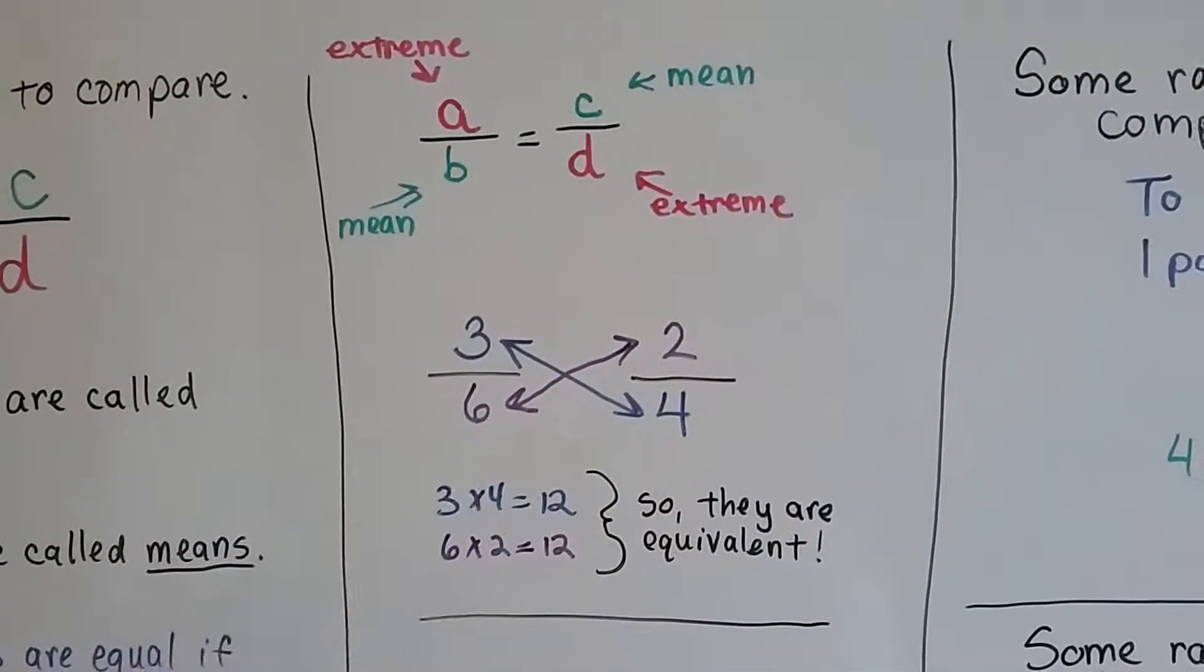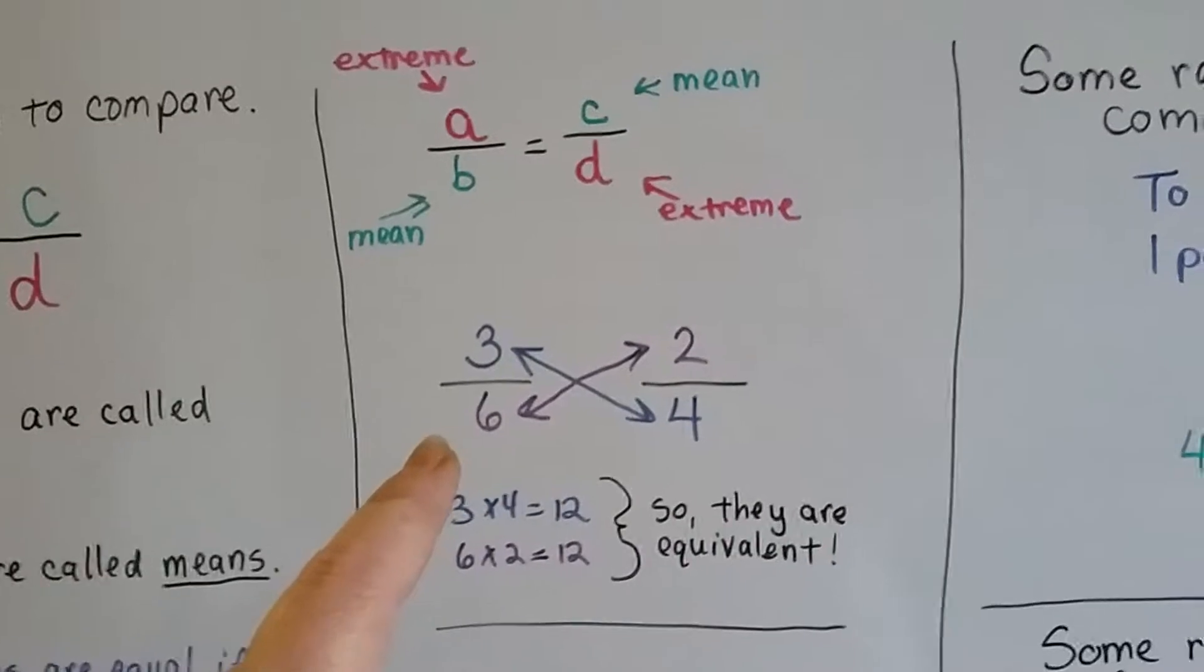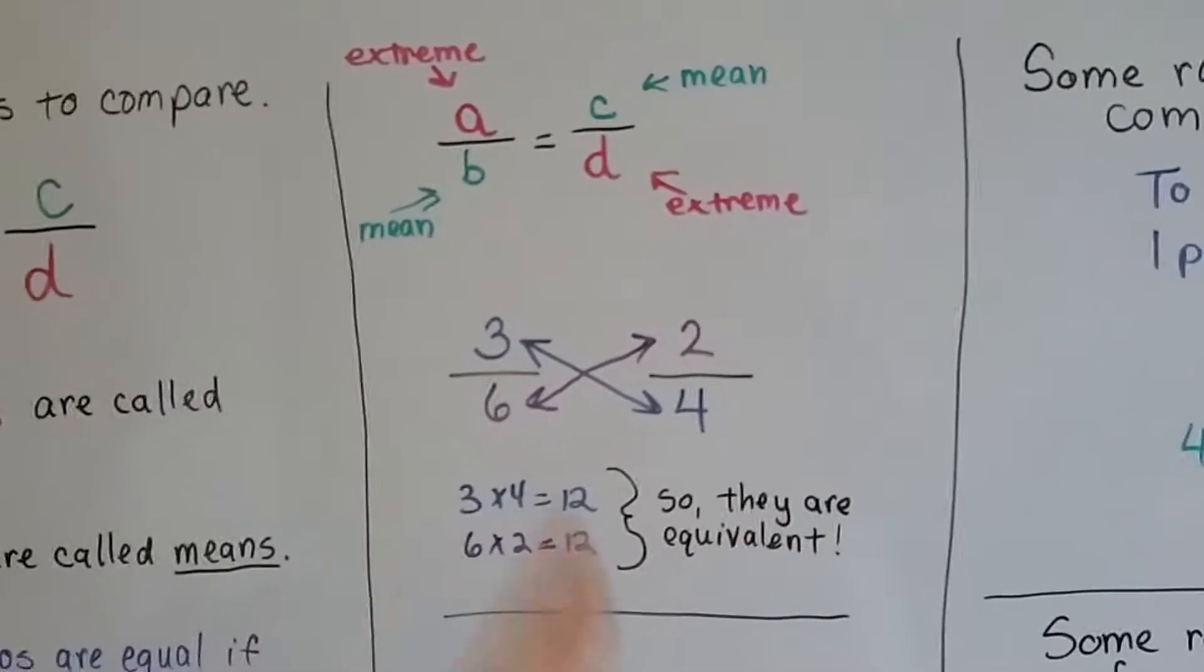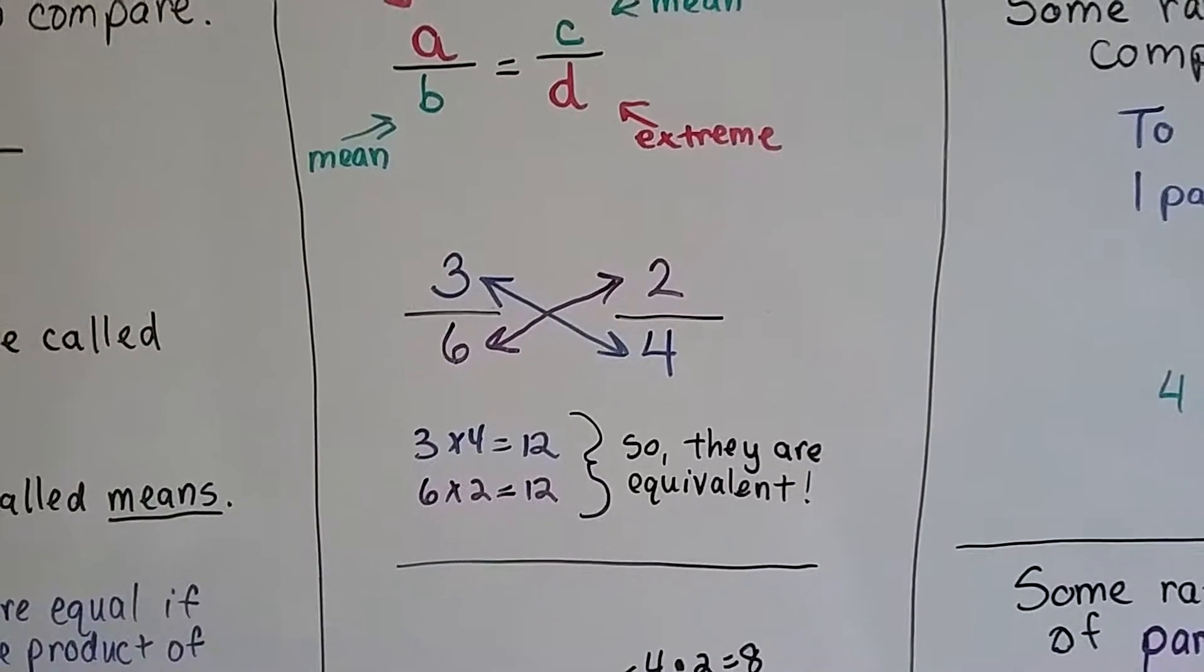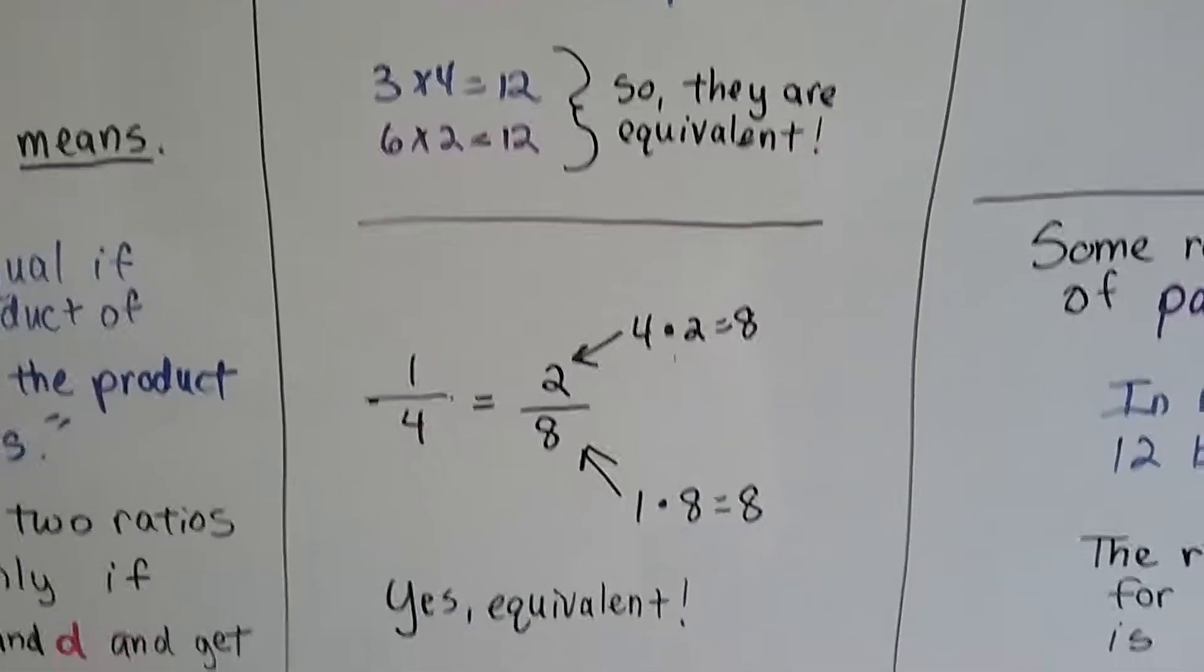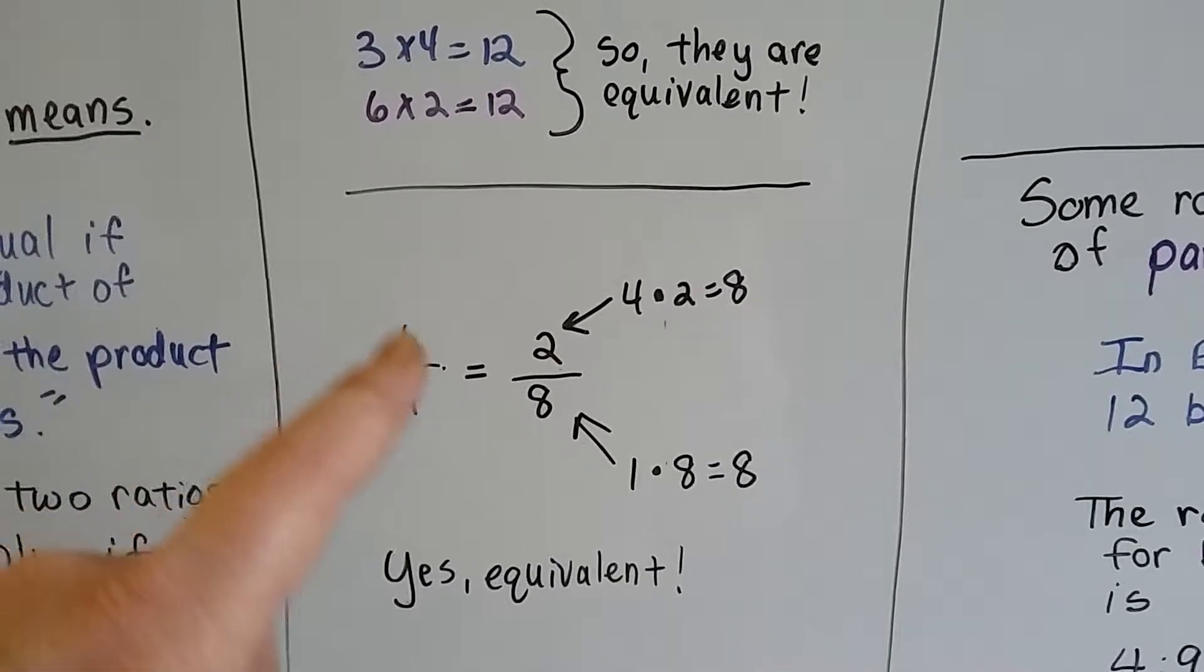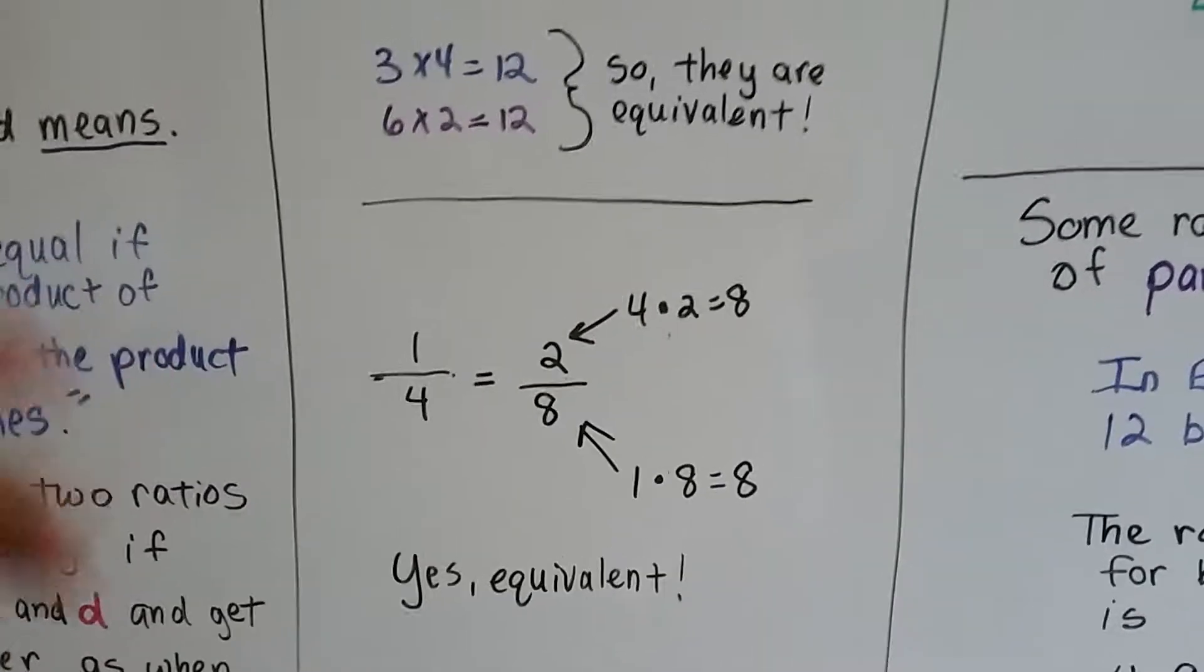3/6 is equivalent to 2/4ths because 3 times 4 is 12 and 2 times 6 is 12. You cross multiply and if they're the same product we know they're equivalent. Isn't that helpful with fractions? You're going to be able to know if fractions are equivalent right away. How about 1/4th and 2/8ths? 1 times 8 is 8 and 4 times 2 is 8. Yep, they're equivalent.